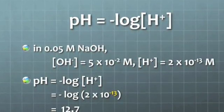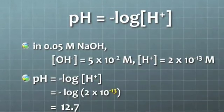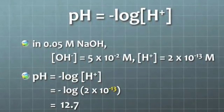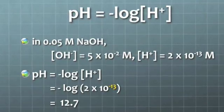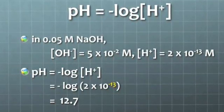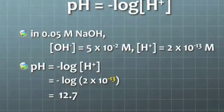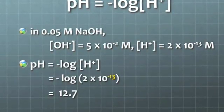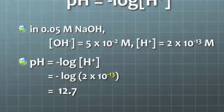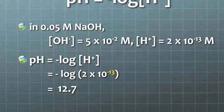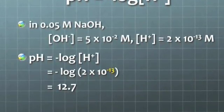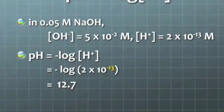Bases have a high concentration of OH-, and so the concentration of H-plus is reduced. For example, 0.05 molar sodium hydroxide has 5 times 10 to the minus 2nd molars of OH-, and only 2 times 10 to the negative 13th molars of H-plus. Thus, its pH is the negative logarithm of 2 times 10 to the negative 13th, and that is 12.7.